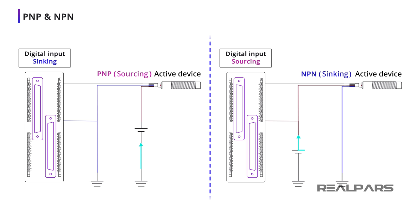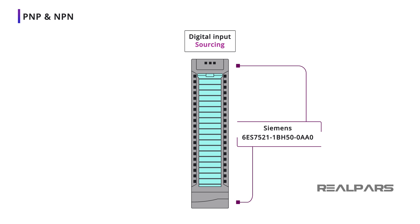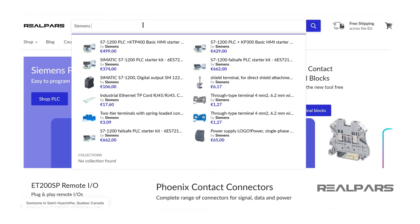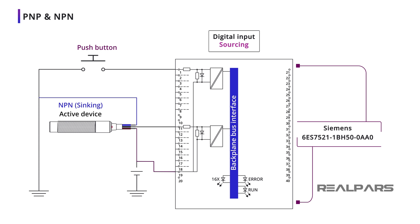Here's something to remember: an NPN device is a sinking device, and a PNP device is a sourcing device. The Siemens Digital Input Module 6ES7521-1BH50-0AA0 is a sourcing type. If you want to order this PLC module to use in your project, you can find the link in the video description. Let's connect a push-button switch and a sinking proximity sensor to two of the inputs. The current is flowing out of the PLC module because it is a sourcing type.